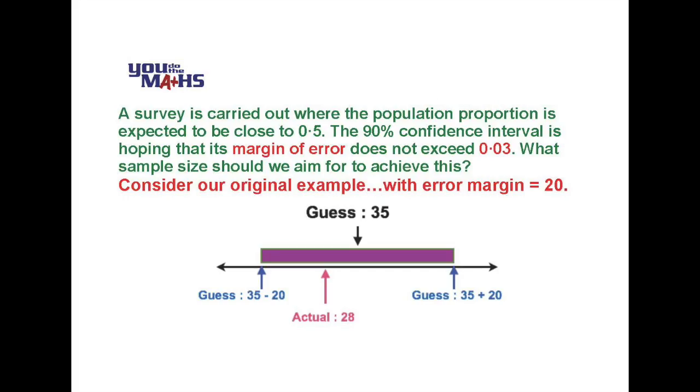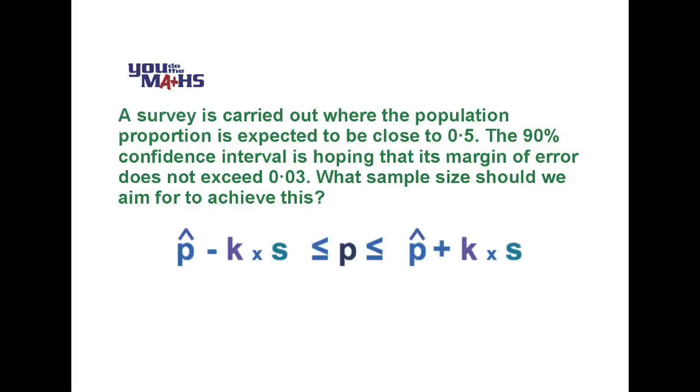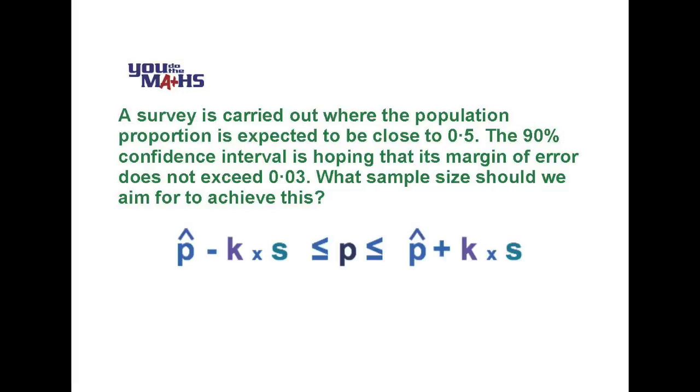If we think back to our original example where we looked at the average age at a party we had a guess of 35 years and the error margin either side of that was plus and minus 20. So that plus and minus 20 represents a distance from our sample proportion. In this example we don't have a sample proportion given to us but what we do have is our formula which tells us that error margin is k multiplied by s or k multiplied by the standard deviation and that has to equal 0.03.